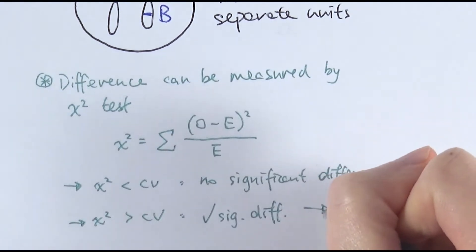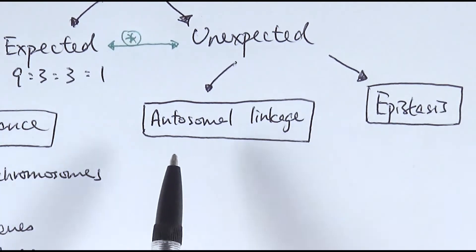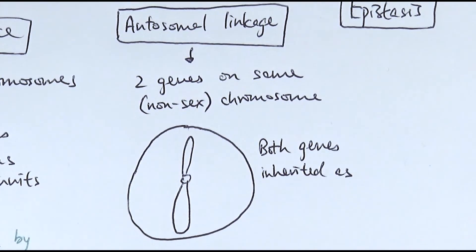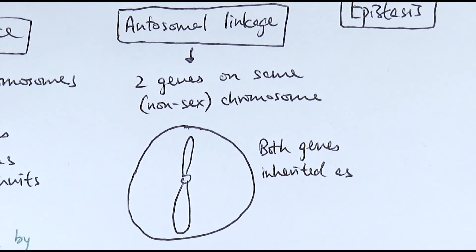Usually it's down to two things. If your observed ratio is significantly different from the expected ratio of 9 to 3 to 3 to 1, then it's either going to be due to autosomal linkage or epistasis. So let's look at autosomal linkage first. In autosomal linkage, it's important to know what the word means. You might have come across sex linkage in the monogenic inheritance section, when we say a gene is found on the sex chromosome X. Autosomal linkage is another type of linkage found on autosomes, which are the non-sex chromosomes - essentially chromosomes 1 to 22. So if two genes are found on the same chromosome, we call that autosomal linkage.